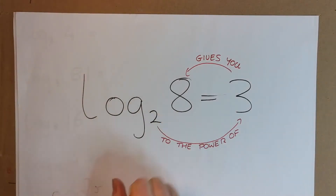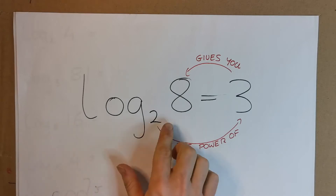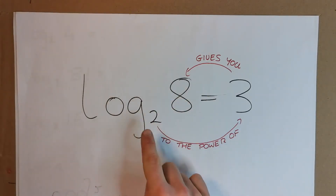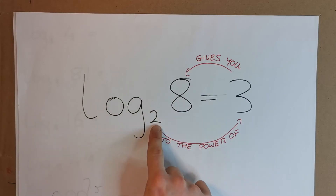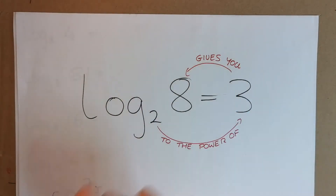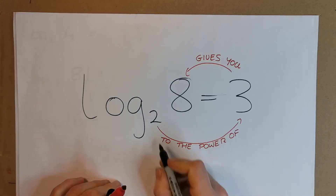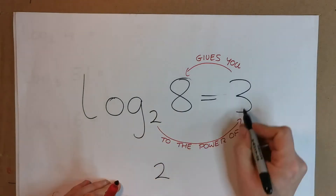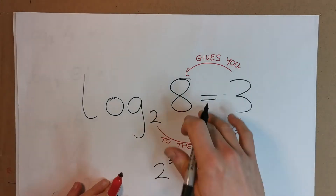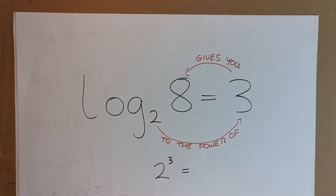Here's a real basic way of looking at what a log is. The log base 2 of 8 is 3. The way you should think of it: log base 2 of 8 means 2 to the power of 3 gives you 8. That's why the log base 2 of 8 is equal to 3. Hopefully that diagram might help you understand it.